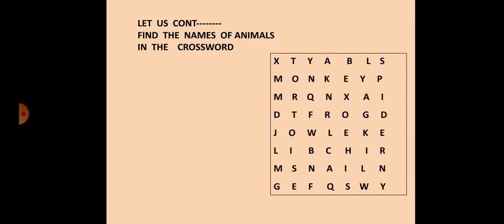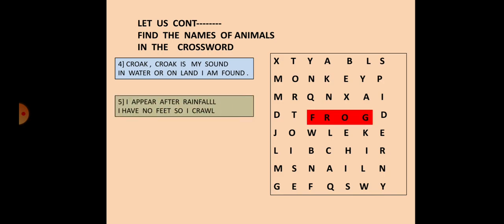Now this continues. We have the fourth question here. Croak croak is my sound, in water and on land I am found. Croak croak is a sound made by the frog. The next one: I appear after rainfall, I have no feet so I crawl. Yes, snail moves very slowly and it crawls.